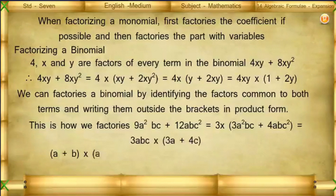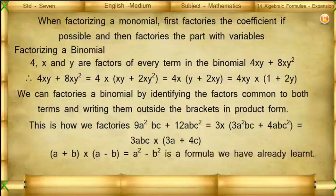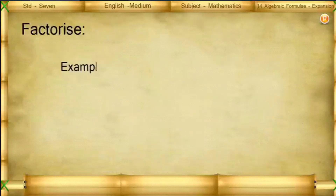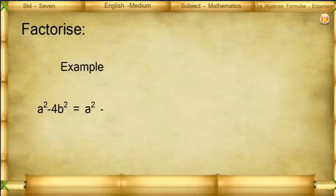The formula (a + b)(a − b) = a² − b² is one we have already learned. Hence, we also get: a² − b² = (a + b)(a − b). Example: a² − 4b² = a² − (2b)² = (a + 2b)(a − 2b).